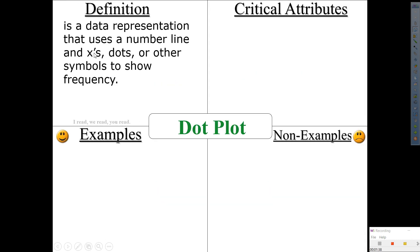So, on your Frayer model, dot plots. Definition. Dot plot is a data representation that uses a number line and x's, dots, or other symbols to show frequency. Other symbols, you can replace that instead of symbols, you can replace that with icons since you guys are used to icons or emojis or whatever. Once again, what is a dot plot? What is a data representation that uses a what? A number line. Only a number line. And we use x's, dots, or other symbols to show frequency.